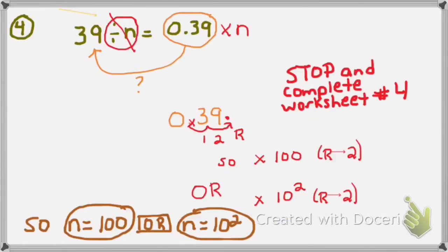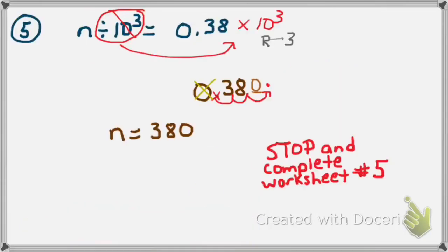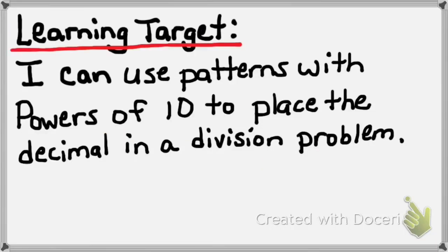Remember, in algebra, you want to capture the operation and the number or variable next to it, circle it, cross it out, and when you move it to the opposite side of the equal sign, change it to the opposite operation. Once you have it there, you can figure out the value of that unknown variable. Hopefully you can confidently say, I can use patterns with powers of 10 to place the decimal in a division problem. We will be doing more practice in class — if you have difficulty, please see a teacher and we will help you.